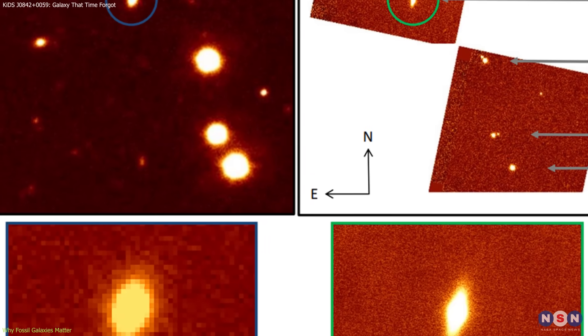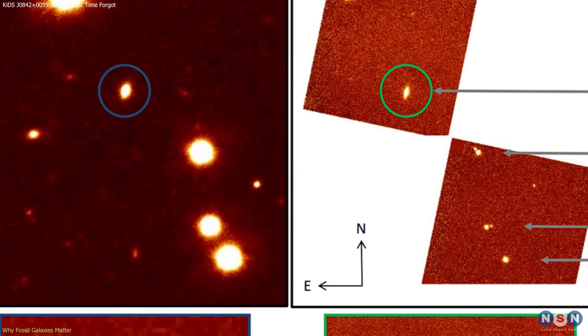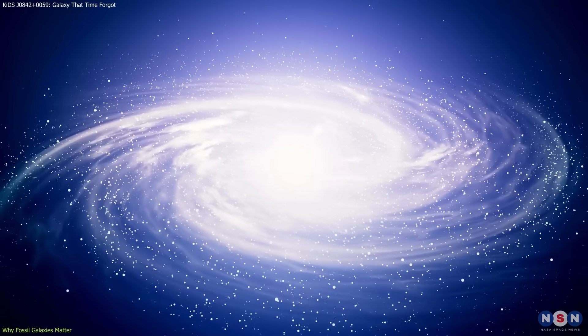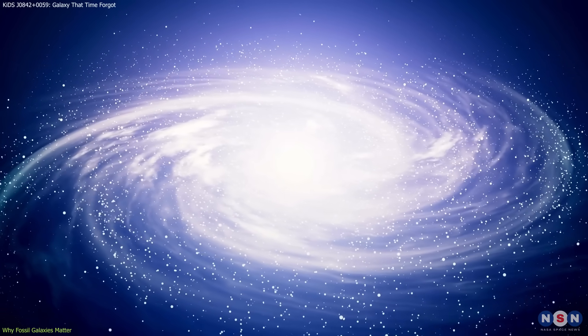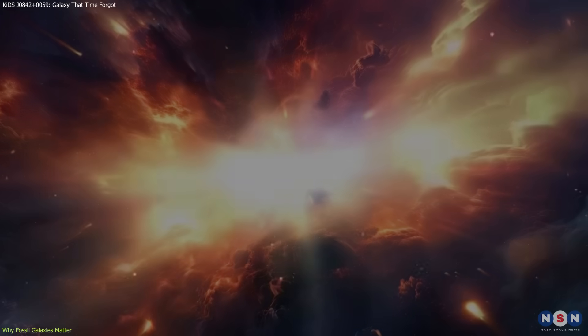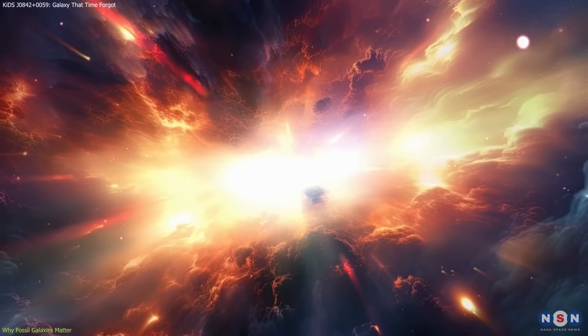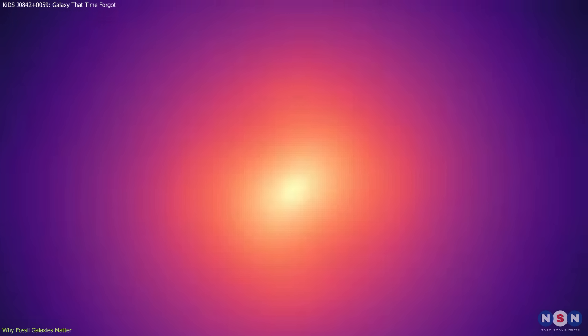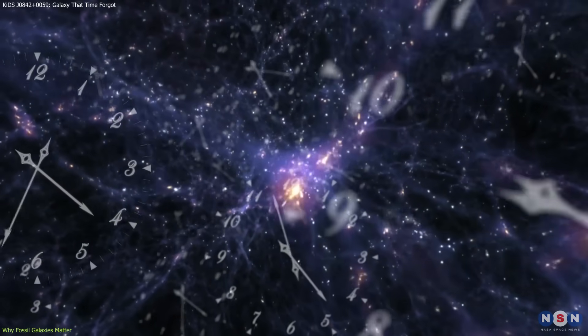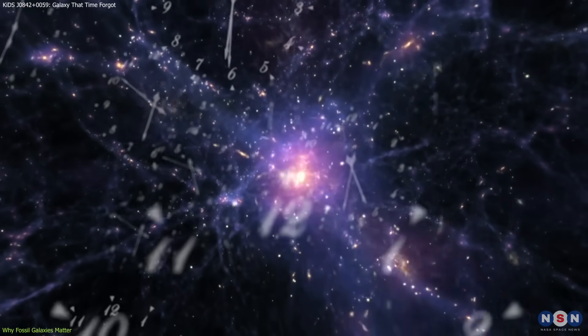This makes it an ideal case study for early galaxy formation. Because it has avoided later disruptions, its structure and composition closely reflect conditions in the early universe. It allows astronomers to isolate what a galaxy looked like before billions of years of growth and interactions complicated the picture.